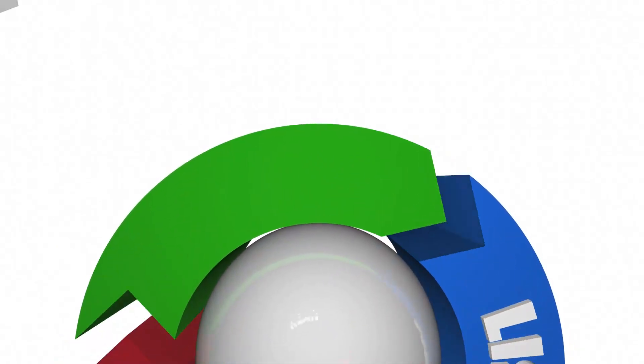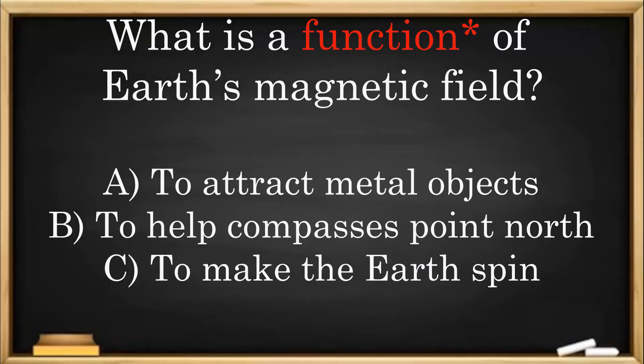Check for understanding. What is the purpose of Earth's magnetic field? A. To attract metal objects. B. To help compasses point north. C. To make the Earth spin.